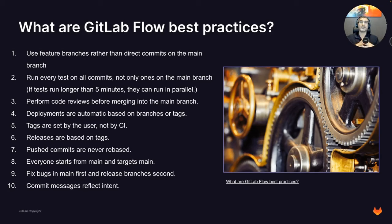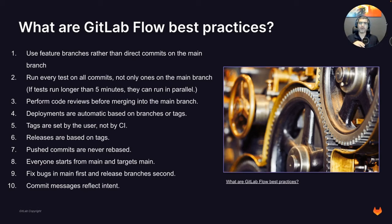Deployments are automatic based on branches and tags—I'll show that in the demo. You can automate the execution of deployments against each environment based on assigned tags or branches. Tags should be set by users, not by CI, and you should set rules on who can create tags, especially for tags that automate deployment to production. Releases should be based on tags. The code you're taking to deploy to production or releasing to the outside world should be based on tags.